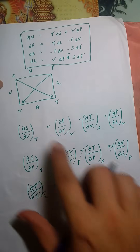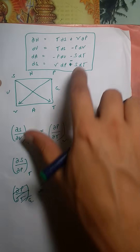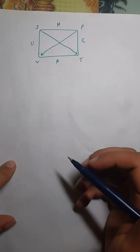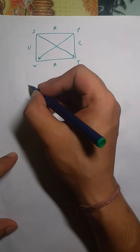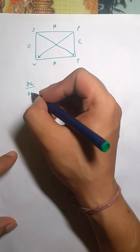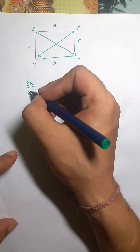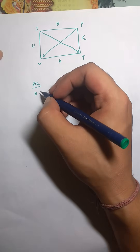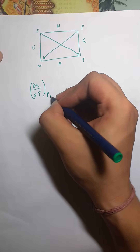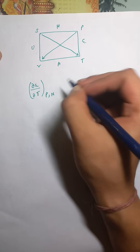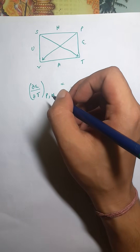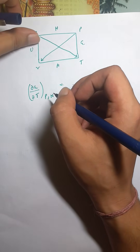We've derived eight formulas — four Maxwell relations and four fundamental thermodynamic relations. In exams, they sometimes ask direct application questions, for example: find (∂G/∂T) at constant P and n. This type of question appeared in GATE 2016.